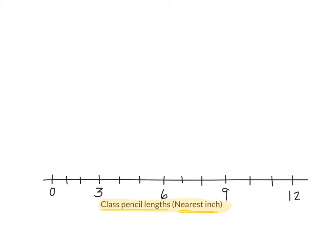Now the next thing our line plot needs is some data. So when I call your name, please tell me what number you wrote down — how long your pencil is. Maria? Four inches. So for the first pencil in our class, we're gonna draw an X where four inches would be. Violet, how about you? Five.